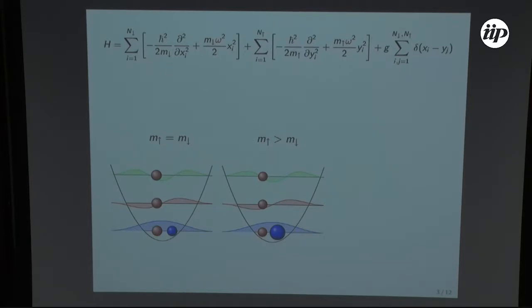And those the masses can be in principle different and the fermions of different types interact with delta like potential.